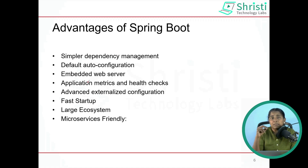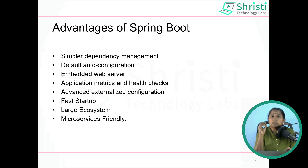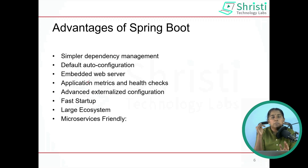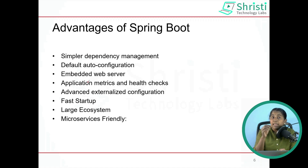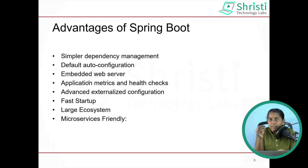With Spring Boot you can simply pick and choose the dependencies you need. It is similar to ordering from a delivery app — you open the menu, select the items, add them to the cart. Same way we work with Spring Boot. Default auto-configuration: if you are creating a web application or REST API, the moment you add Spring Web as a dependency, the Tomcat server will be added automatically.